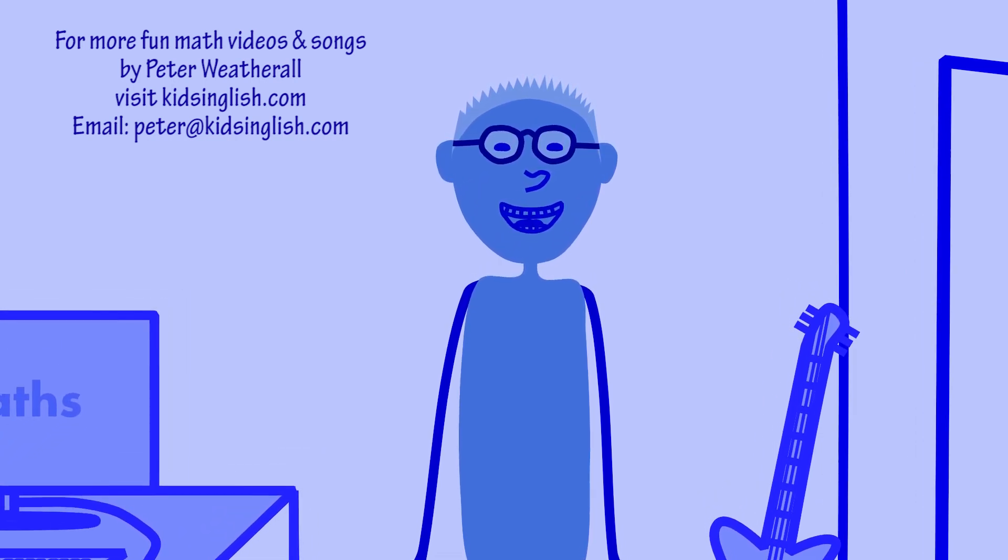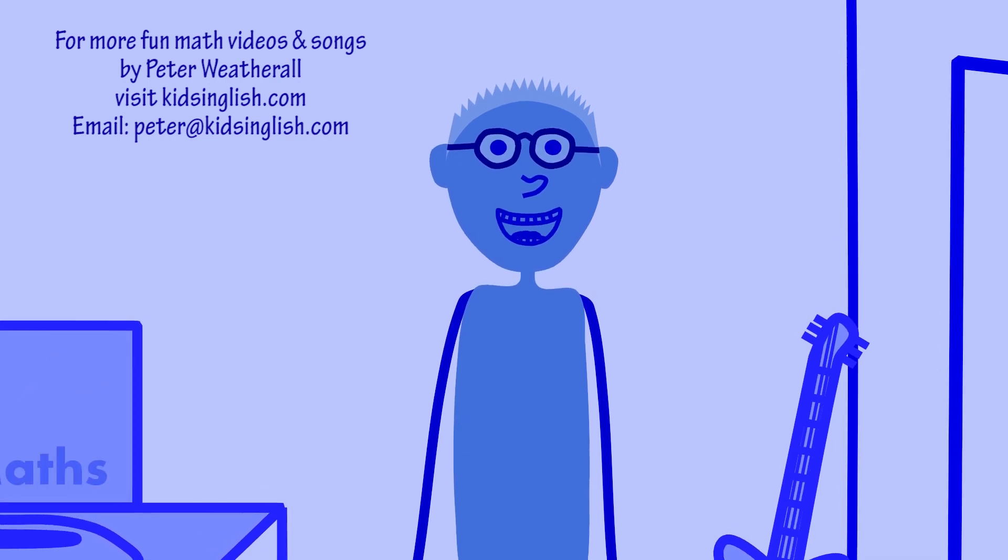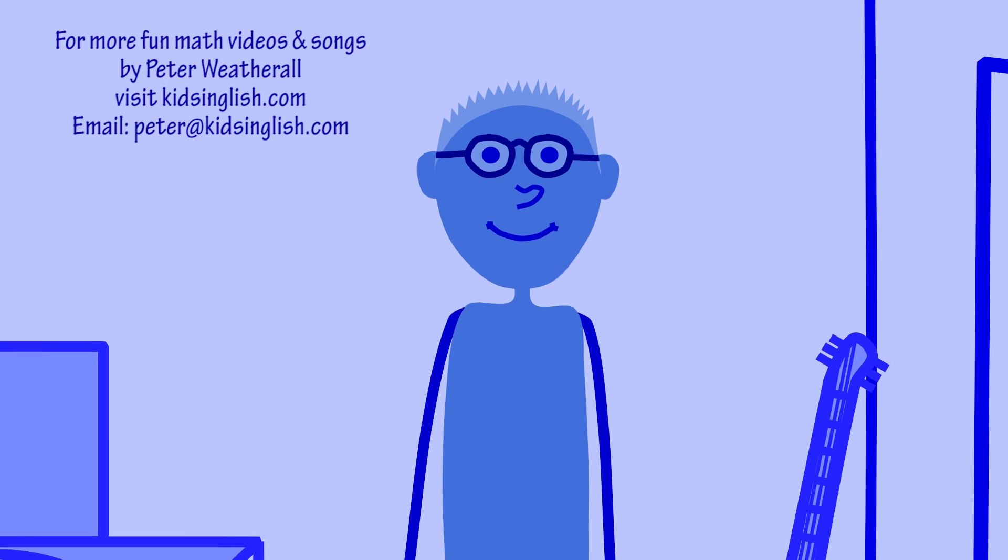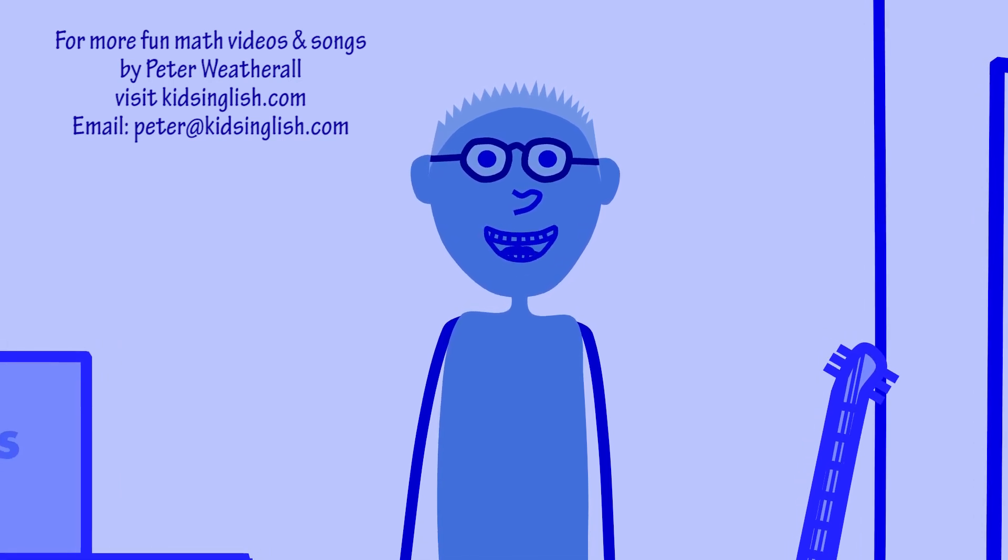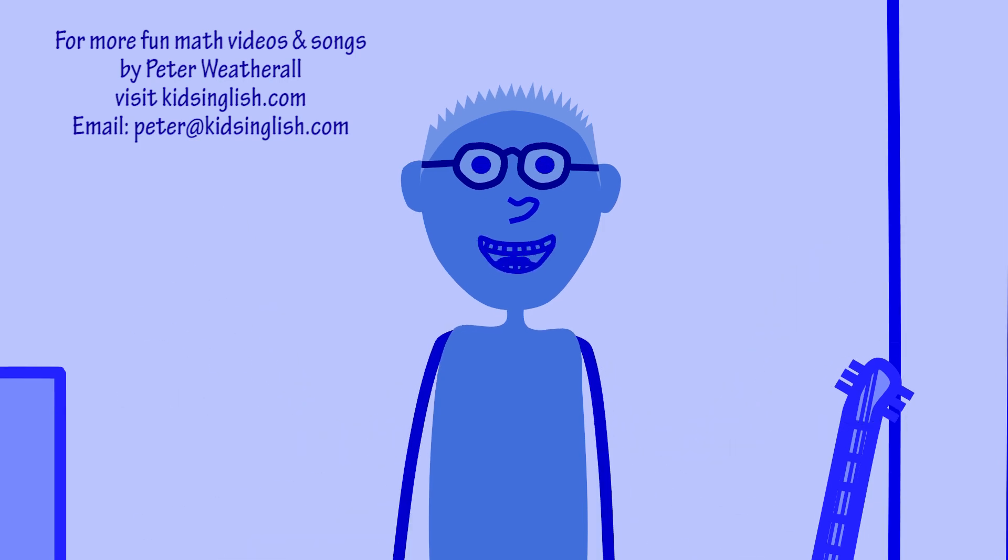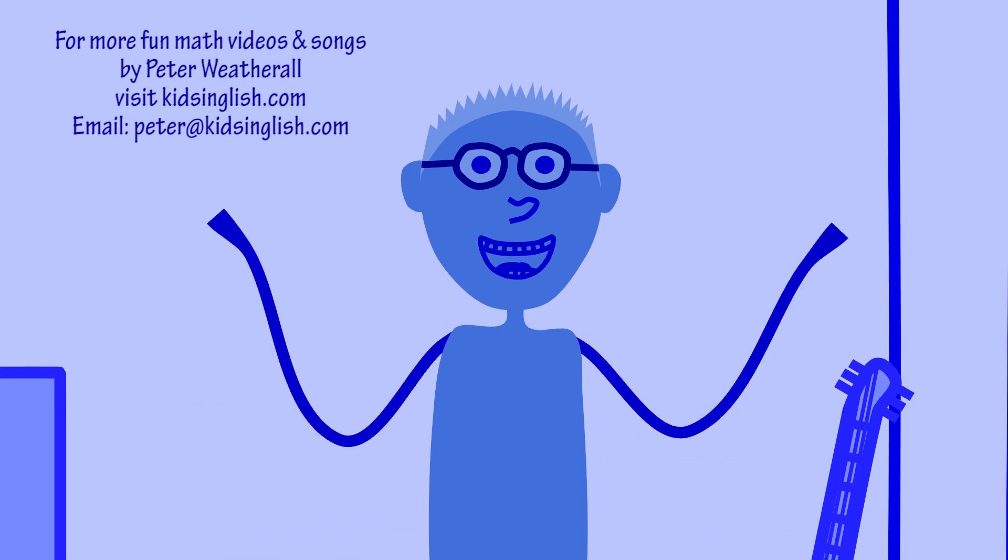To decide which slave lives, he sets a difficult multiplication problem. The slave that solves it first will be saved from the lions. But you have no calculator, no smartphone, no computer. What are you going to do?